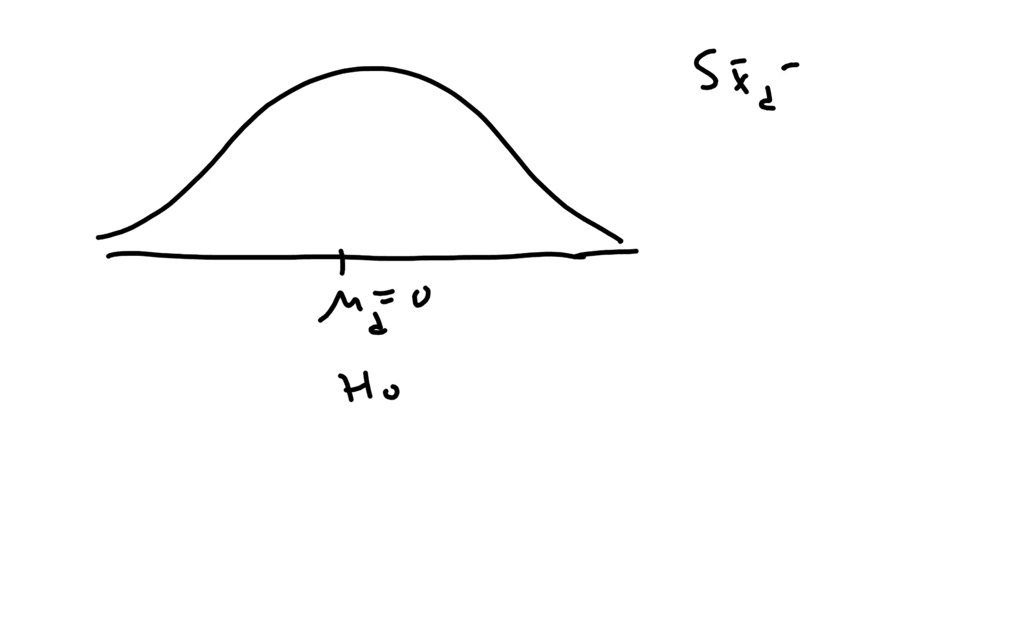We make a note of our standard deviation again. Standard deviation of X̄_d turned out to be 0.106. So it's nice to mark off a couple of standard deviations. This is 0.106, this is 0.212, negative 0.106, and negative 0.212.